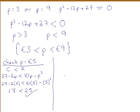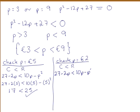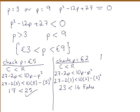We will check a value less than 3 euro — so we will check p equal to 2 euro. Again, our cost should be less than revenue to make a profit, so filling in 2 for p. Working this out, we get that 23 is less than 16, which is false. So we do not make a profit, which is what we expected.